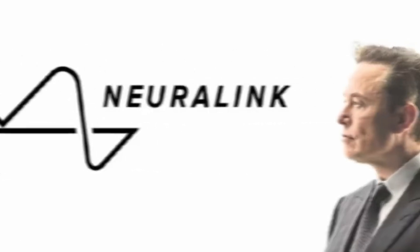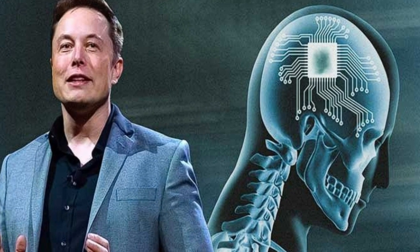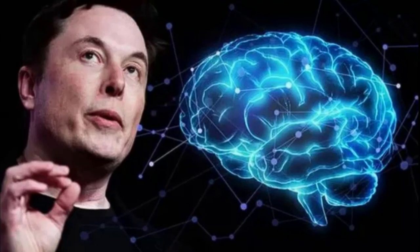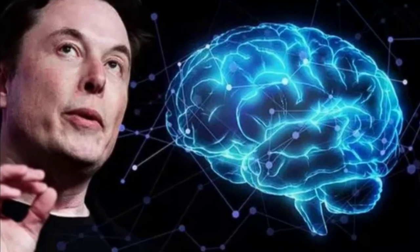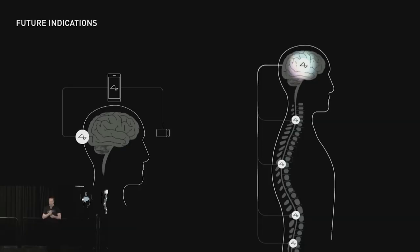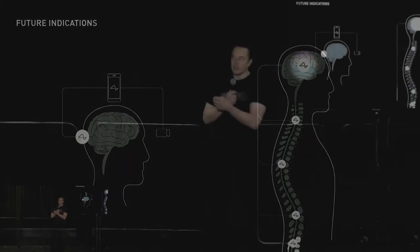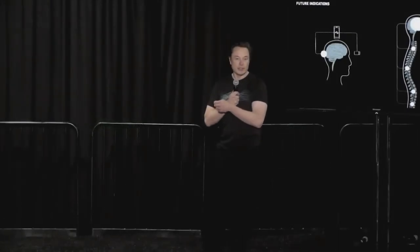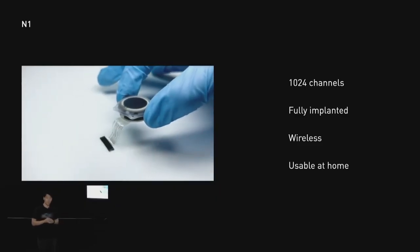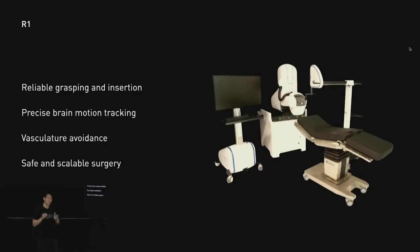6. Neuralink – Merging Humans and Technology. Established by Musk in 2016, Neuralink is a neurotechnology company focused on developing brain-computer interfaces (BCIs). Musk's vision is to enhance human cognition and help individuals with neurological disorders through BCIs. This invention has the potential to change the way we interact with technology and deepen our understanding of the human brain.